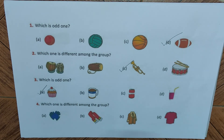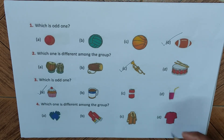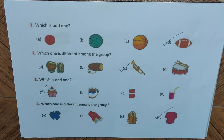Question four: which one is different? We have gloves, a muffler, a coat, and a T-shirt. Gloves, muffler, and coat are used in winter, whereas a T-shirt is used in summer. So the T-shirt is the different one.